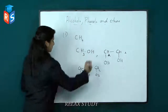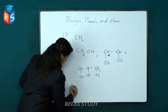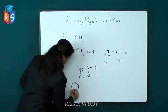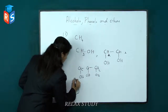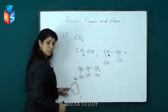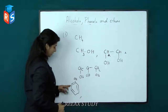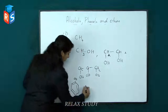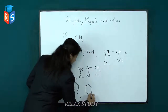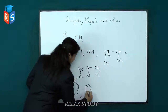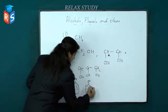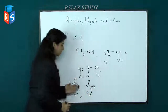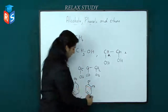Let us see some examples. This is monohydric — that is simple phenol. It is monohydric because there is only one OH group in the aromatic benzene compound. Then here, if two hydrogen atoms get replaced by two OH groups, it is called dihydric.